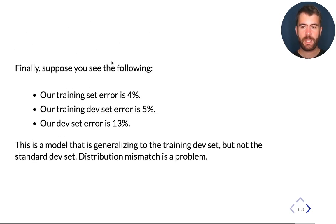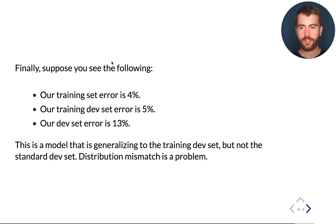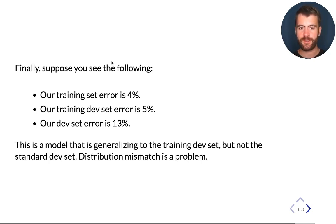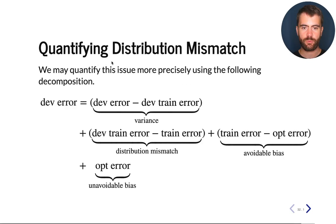Finally, if we see a training error of 4%, a training-dev error of 5%, but a dev set error of 13%, we have a model which generalizes to the training-dev set but not to the standard dev set. The reason can only be that the dev set is very different from the training-dev set — this is an instance of a distribution mismatch problem.